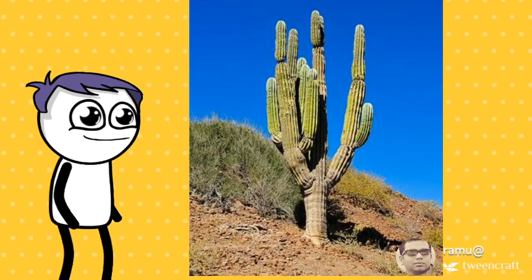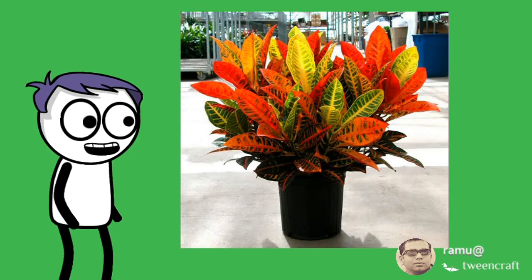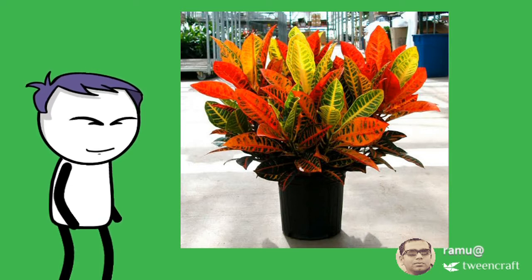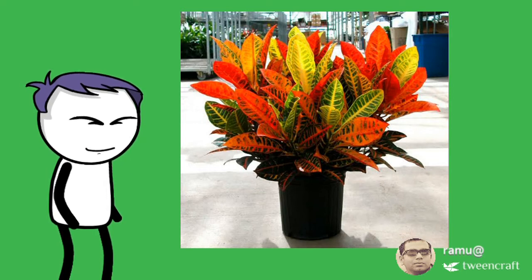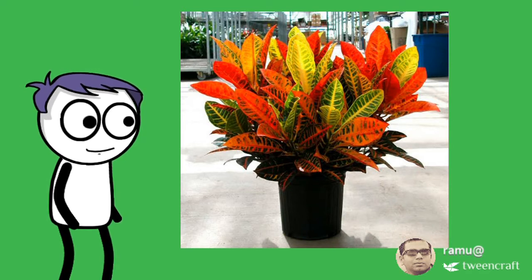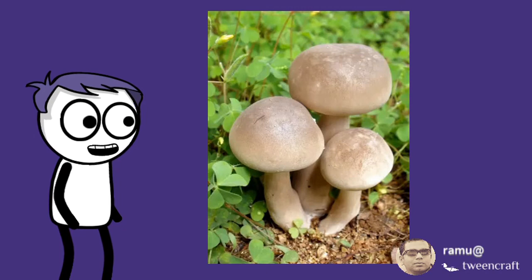Look at this beautiful plant — it has yellowish and reddish leaves. Then how does it continue the process of photosynthesis? These leaves may appear green and yellow, but they have hidden chlorophyll. These hidden chlorophylls help them to continue the process of photosynthesis.